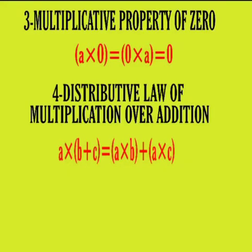Third property: Multiplicative property of zero. For every whole number A, A cross 0 is equal to 0 cross A is equal to 0. That means if any whole number is multiplied with 0, the result is always 0.